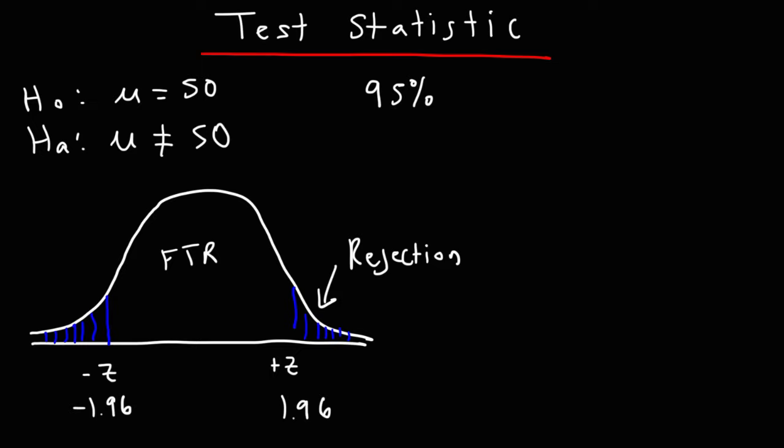Let's call that calculated Z value ZC. If ZC is to the right of Z, that means you should reject the null hypothesis. If ZC is to the left of Z — that is, if it's in the fail-to-reject region — you shouldn't reject the null hypothesis; you should keep it.